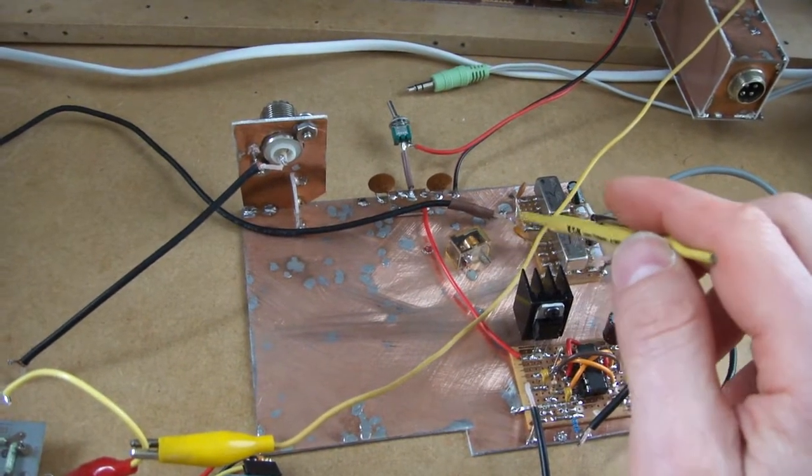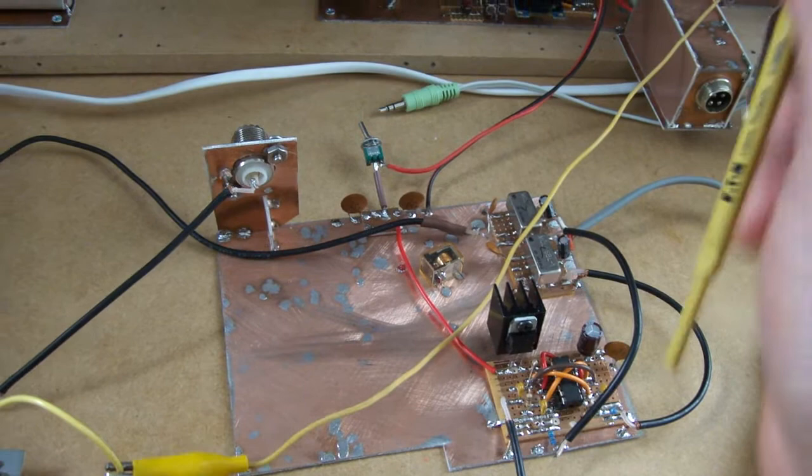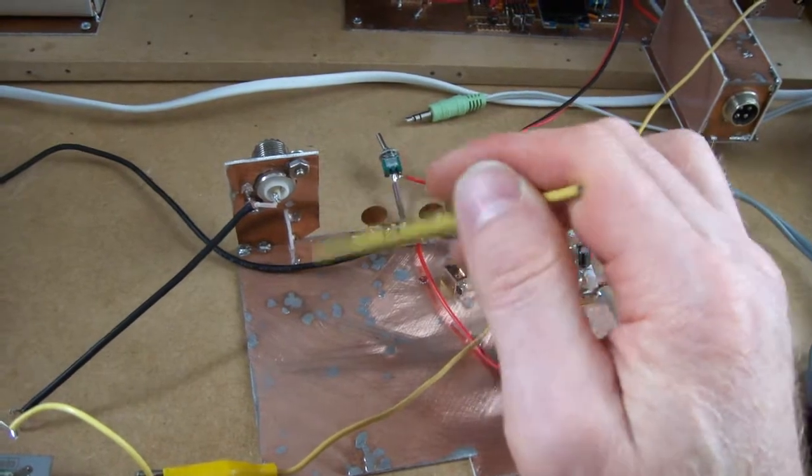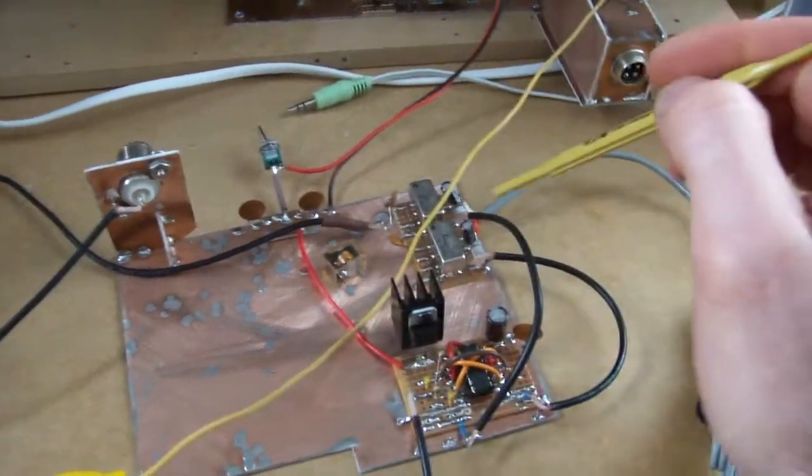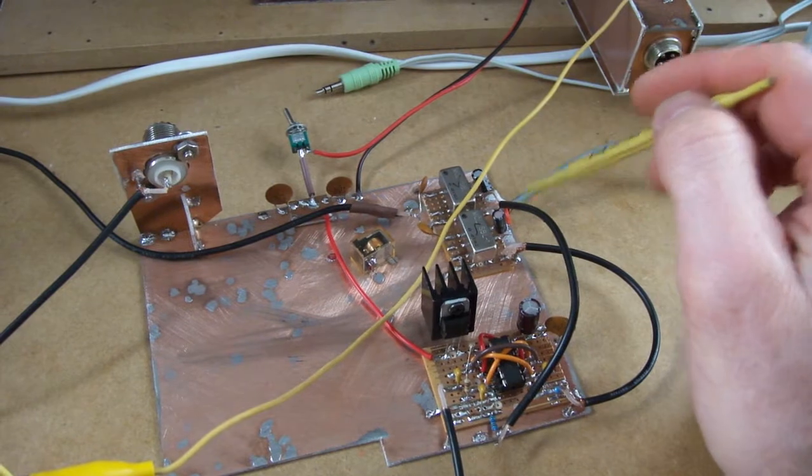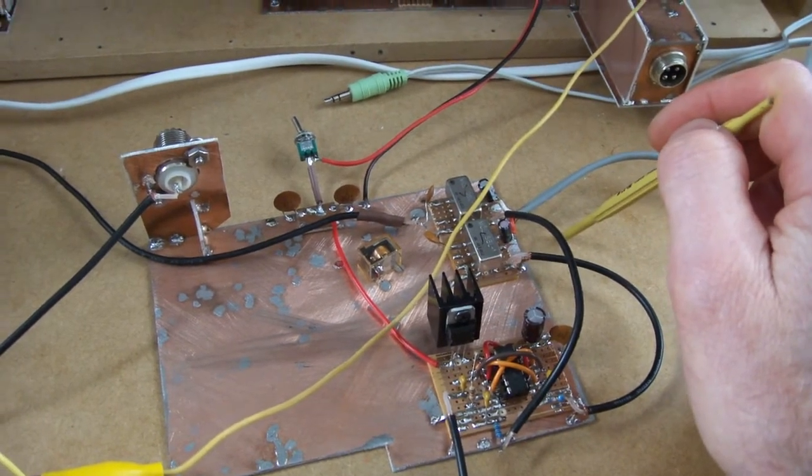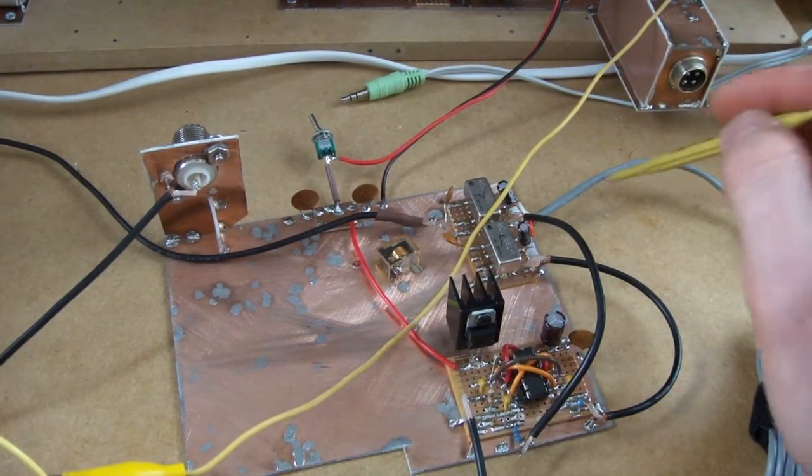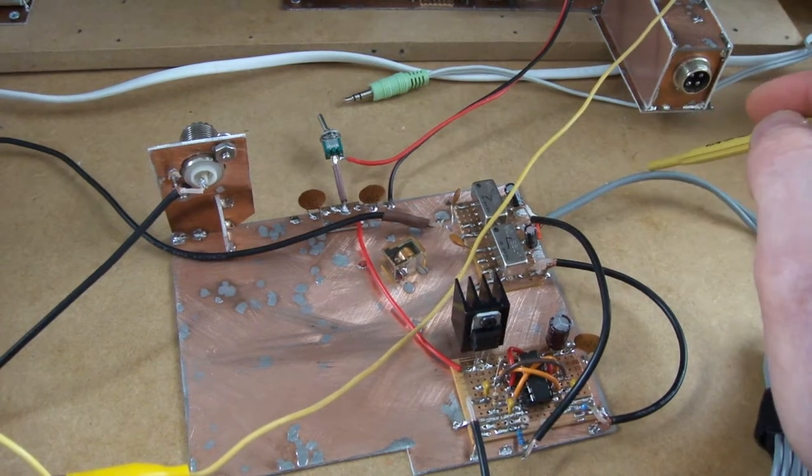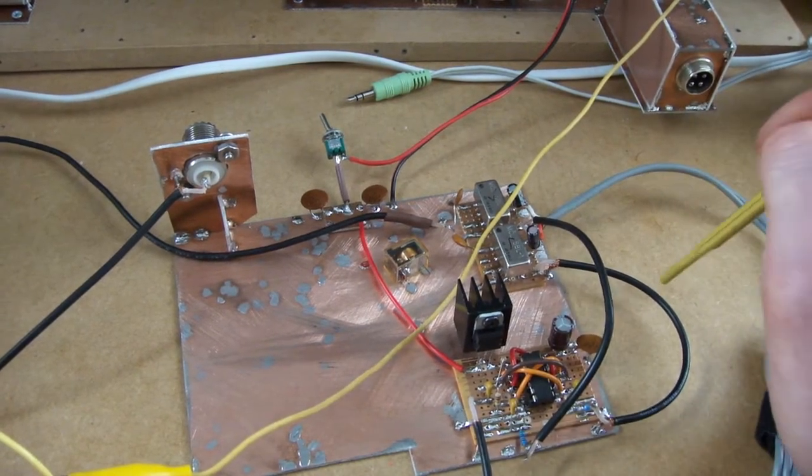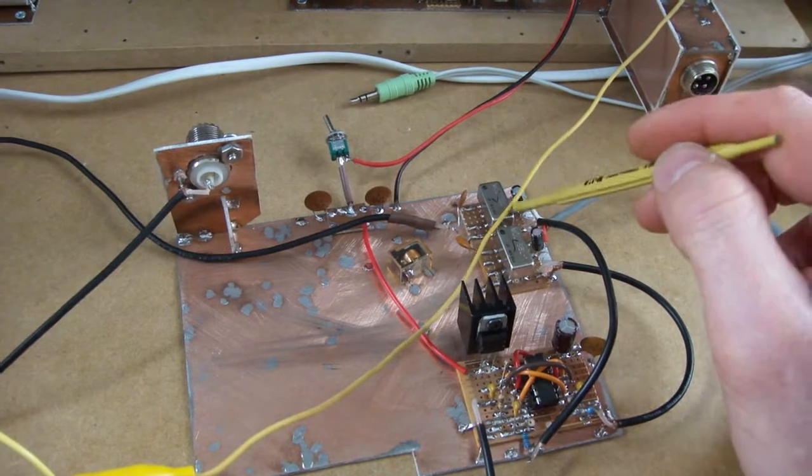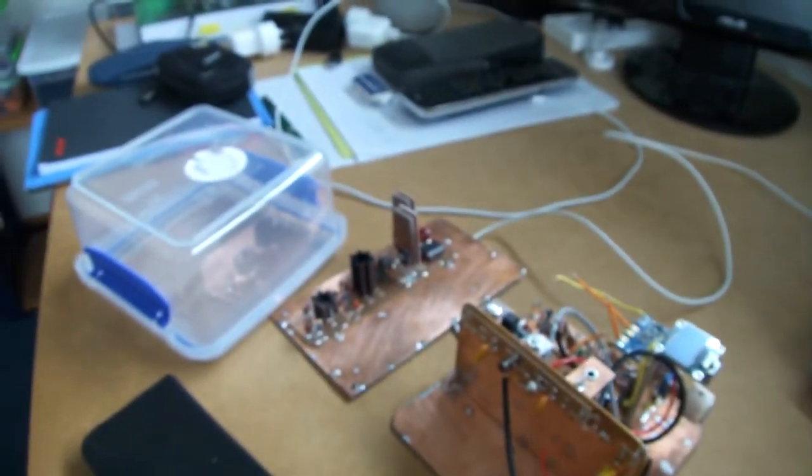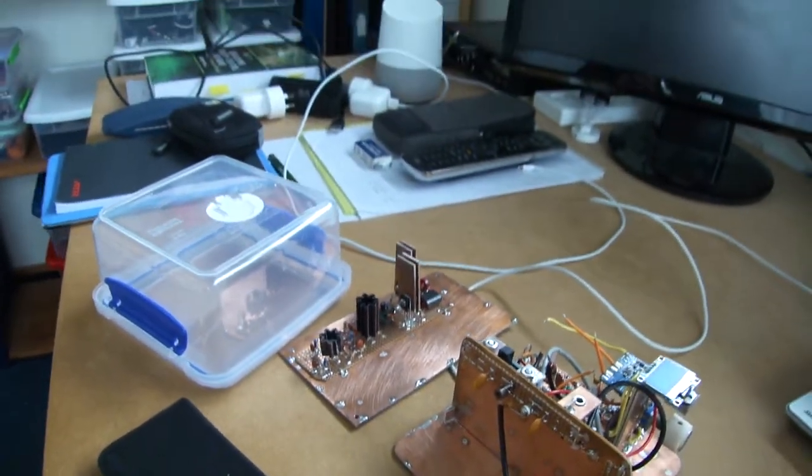I'll use relays to switch. We'll share the output of the SBL1 between the PA side and on the receive side coming in from the antenna through the RF amp. On the other side of the SBL1s, I'll need a double pole double throw switch.